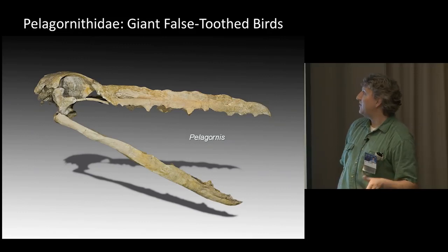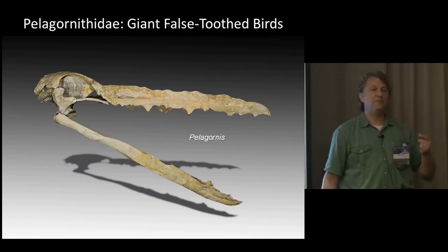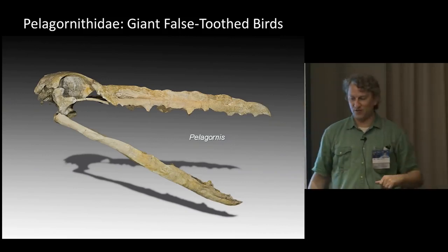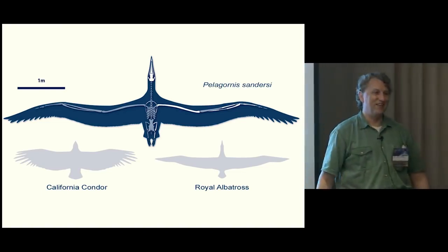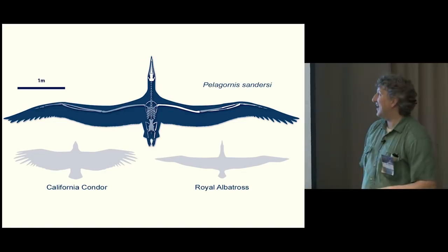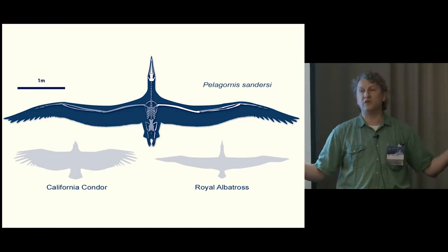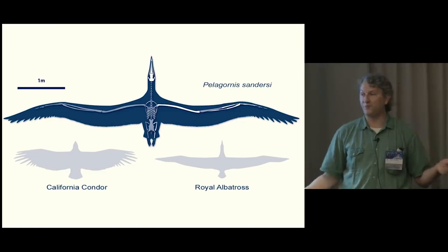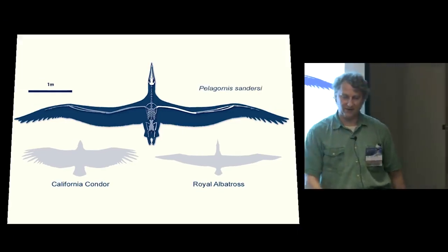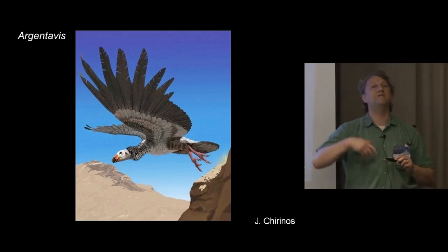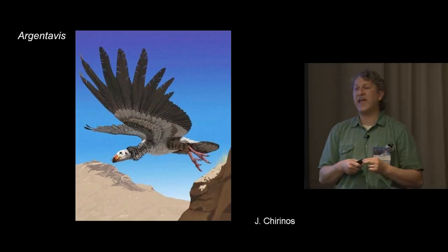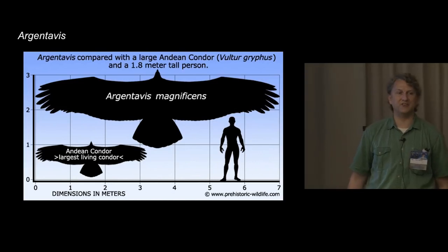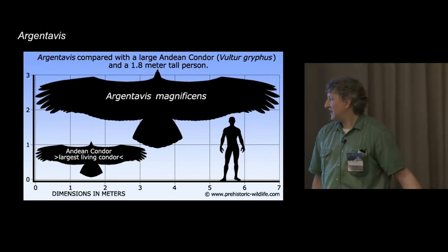Pelagornithids are 'false-toothed' in that they're not actual teeth but projections from the beak functioning like teeth. They were big: shown to scale, one royal albatross and one California condor together make up just one of its wings. Pelagornis had long tapered wings like an albatross - an oceanic soarer. In contrast, there were broad-winged soaring forms in South America - the largest capable of flight was Argentavis, with a broader wingspan, reconstructed here against a human and compared to an Andean condor. It was pushing the limits of feathered flight.